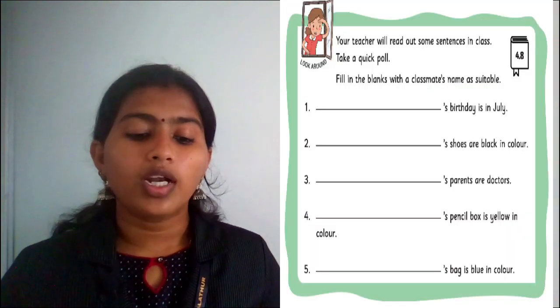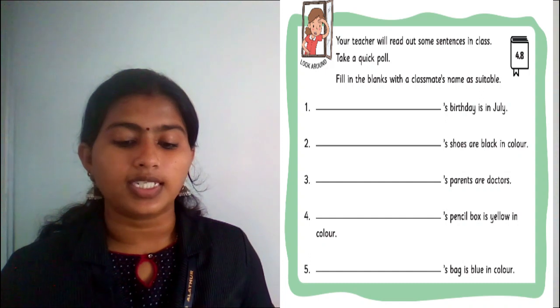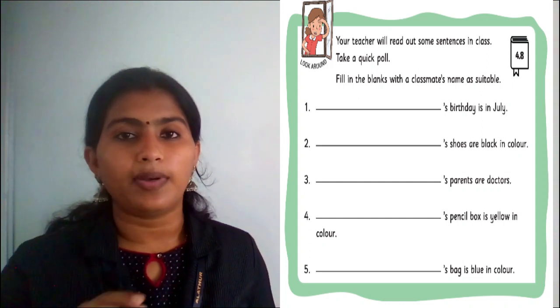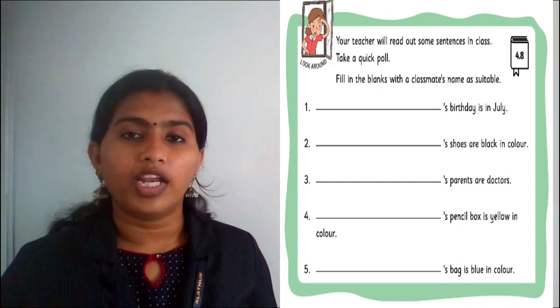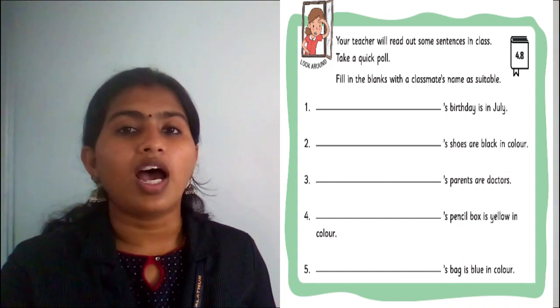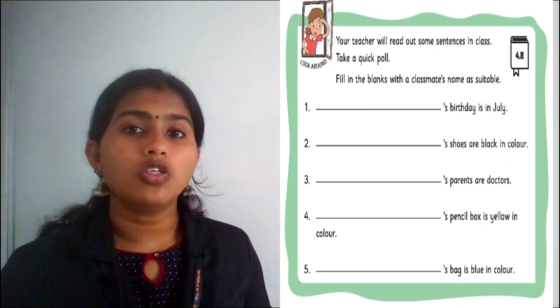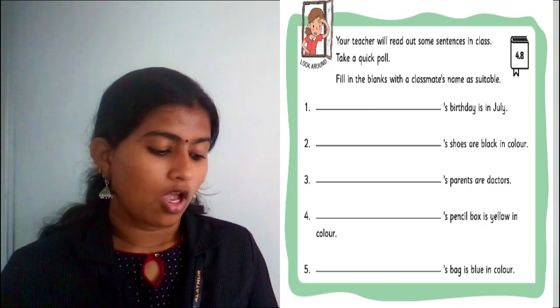Color the words denoting proper nouns in blue and those denoting common nouns in yellow. There is a simple activity — you should do it individually. Your teacher will read out some sentences in class. Fill in the blanks with a classmate's name as suitable. For example, dash's birthday is in July — so you would write: Swadhi's birthday is in July. While doing that activity, you might have noticed this punctuation mark — it is called an apostrophe.